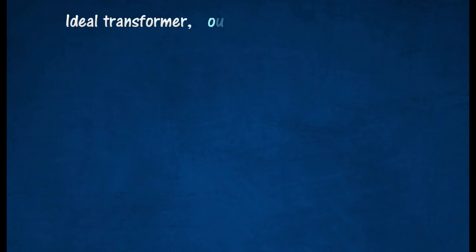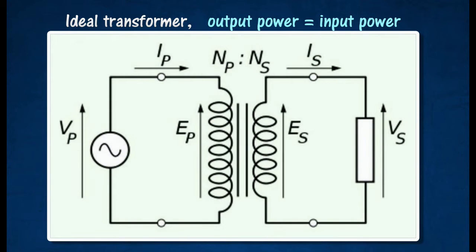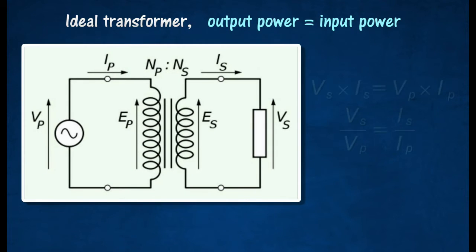Assuming that the transformer is 100% efficient. A transformer is 100% efficient if its output power is equal to its input power. A transformer that is 100% efficient is also known as an ideal transformer. The power output from the secondary coil will be the same as the power input to the primary coil.